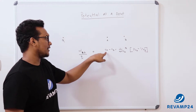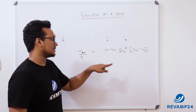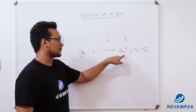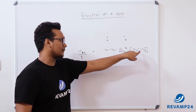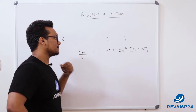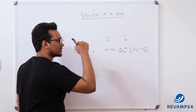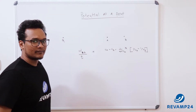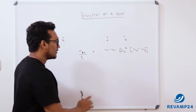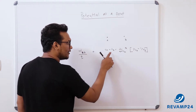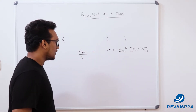This is V_a minus V_b, which equals 1 over 4πε₀ times q times (1/r_a minus 1/r_b). Now I want to find the potential at point a. That is possible when V_b is made equal to 0.